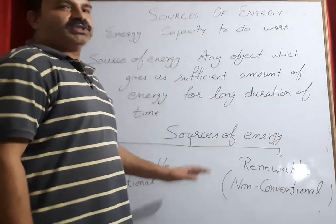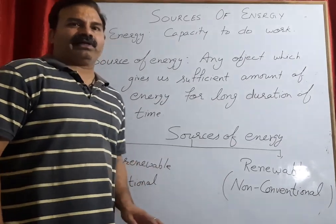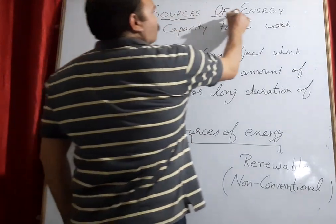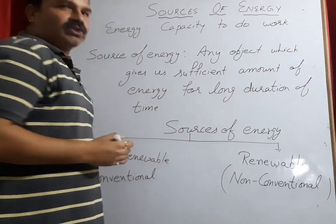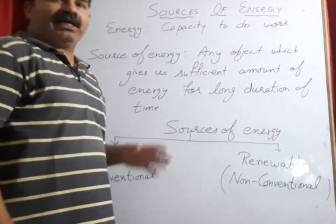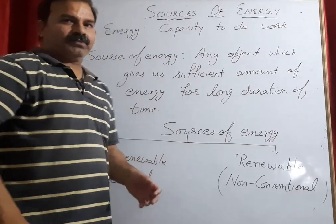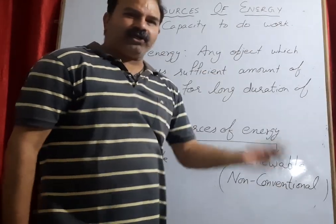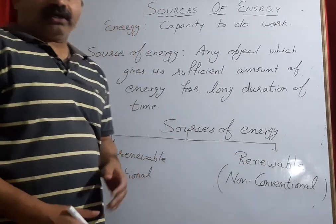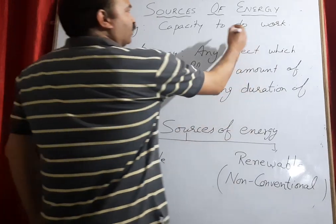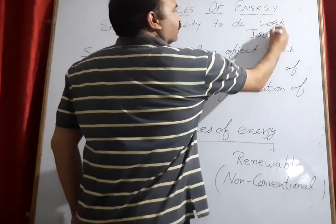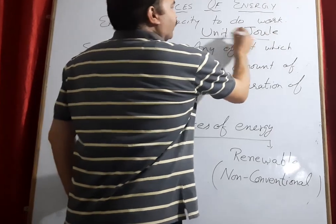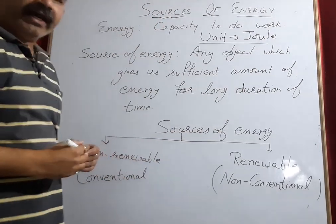Good morning. Today we are going to start with a new chapter of class 10 physics — that is Sources of Energy. First of all, you people have learned in class 9 what is energy. Energy is the capacity to do work, or the ability of a body to do work. The SI unit of energy is Joule — for any type of energy, the SI unit is always Joule.